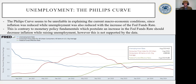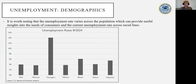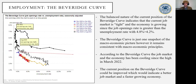When we look at unemployment across demographics, we can see average expected results — nothing really surprising here. So what's going on in the labor market? That is explained through the Beveridge curve.